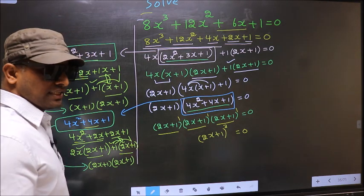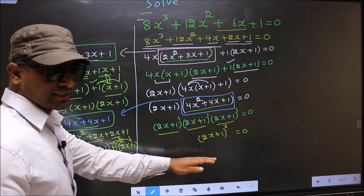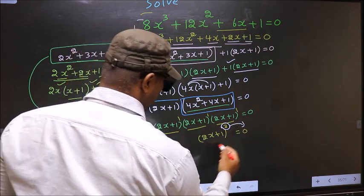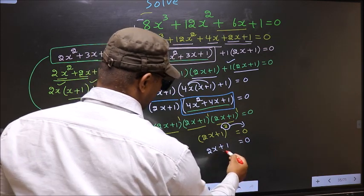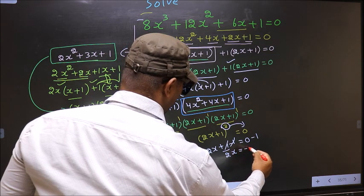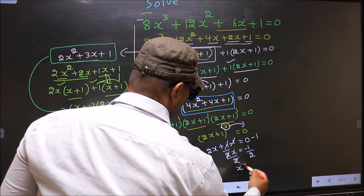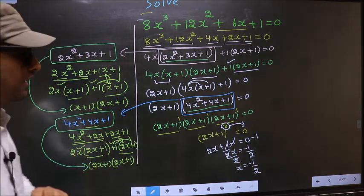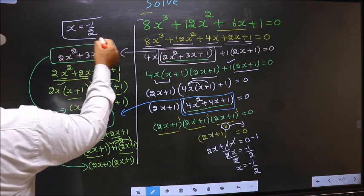They told us to solve, means we should get the values of x. For that we should simplify further. First we shift the cube to the other side, so it becomes the cube root. Cube root of 0 is 0. Now remove +1 by subtracting 1: this cancels out, giving 2x = −1. Now remove 2 by dividing by 2: this cancels out, giving x = −1/2. So we got only one value of x, that is −1/2. This is our answer.